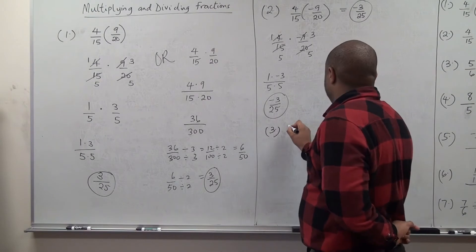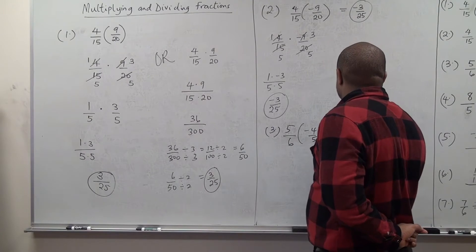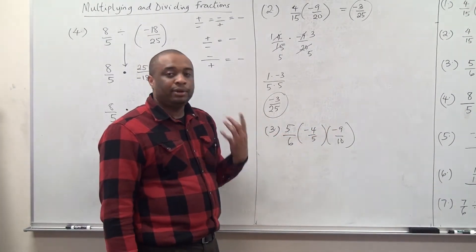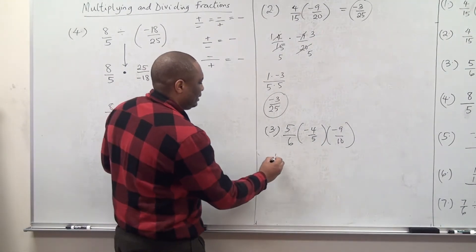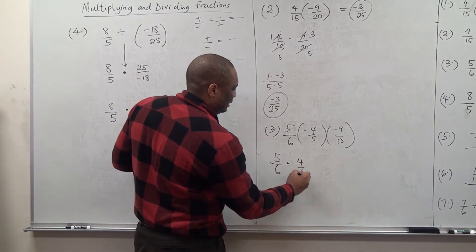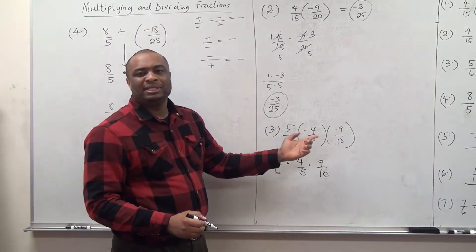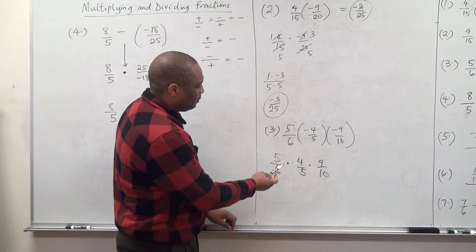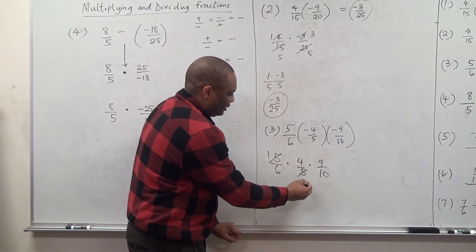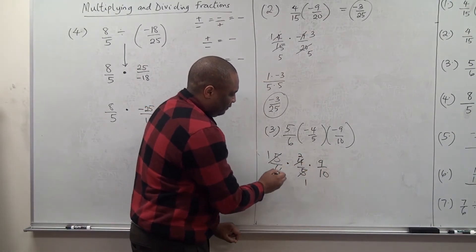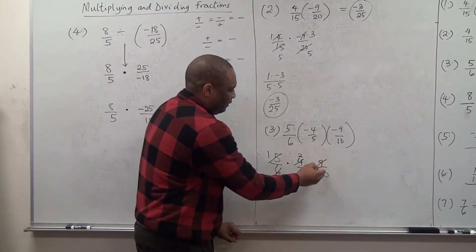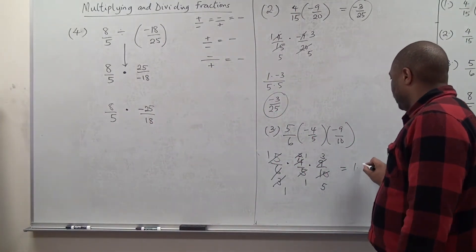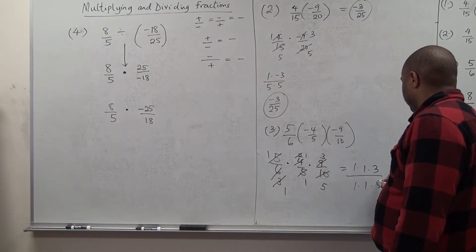Number 3: 5 over 6 times negative 4 over 5 times negative 9 over 10. Positive times negative is negative, and negative times negative is positive, so the answer will be positive. Simplifying: 5 divides 5 is 1, 5 divides 5 is 1; 2 divides 4 is 2, 2 divides 6 is 3; 3 divides 3 is 1, 3 divides 9 is 3; 2 divides 2 is 1, 2 divides 10 is 5. So we have 1 times 1 times 3 over 1 times 1 times 5, which gives 3 over 5.